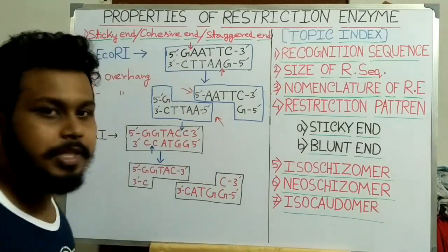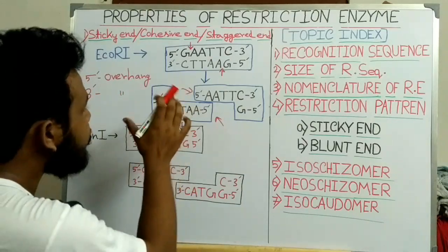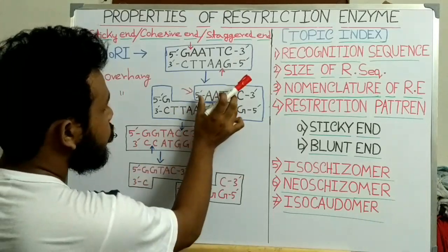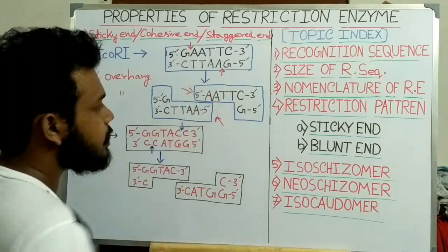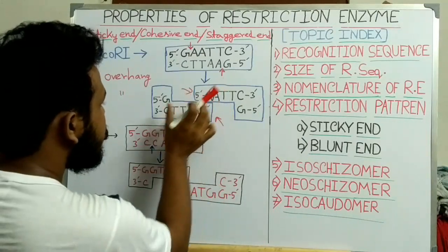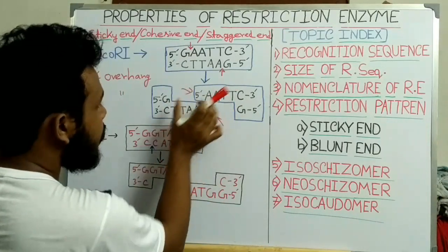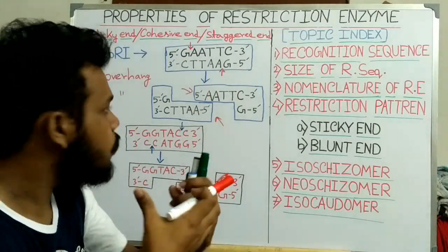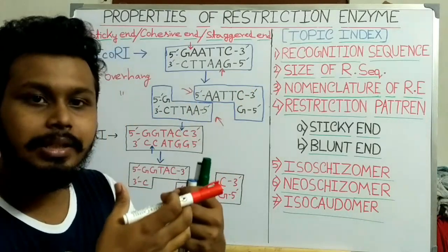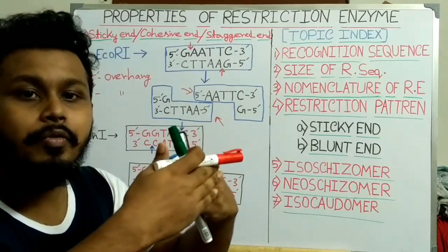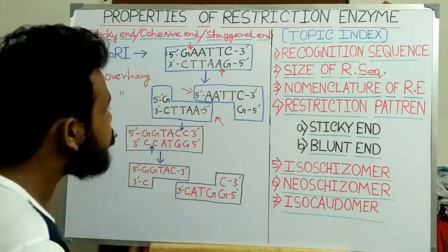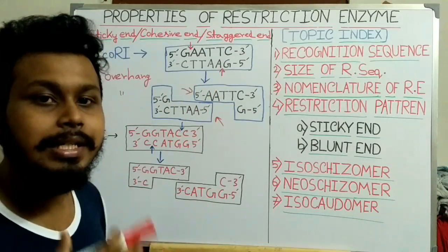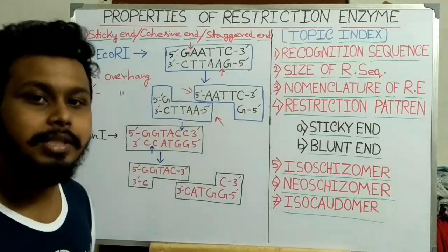These are the two types of sticky end. Why is this structure called the sticky end? Because these two single-stranded overhang structures are complementary to each other. When we bring these two DNA strands together, they can base pair with each other very easily. That's why these two single-stranded structures are called the sticky end.